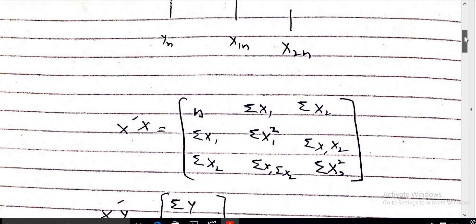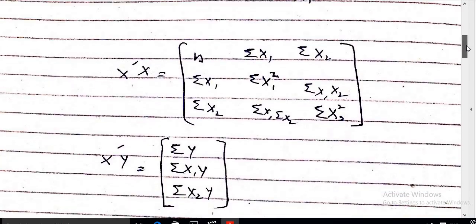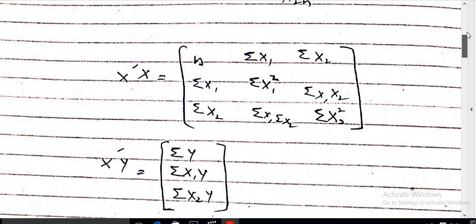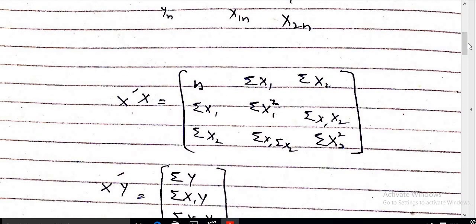After making the multiplications and simplifications of the columns of the variables, we have obtained that X transpose X is equal to: the first row of this matrix will be n, sum of x1, sum of x2; then sum of x1, sum of x1 squared, sum of x1·x2; then sum of x2, sum of x1·x2, sum of x2 squared. In this pattern we can calculate the value of X transpose X.